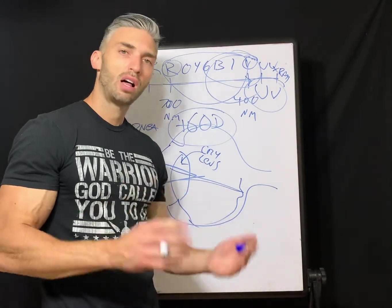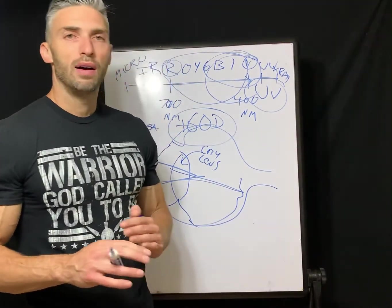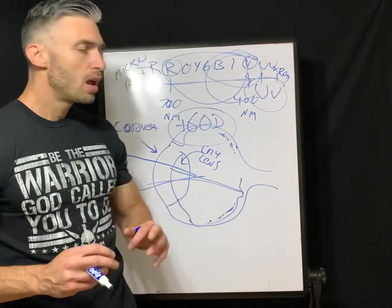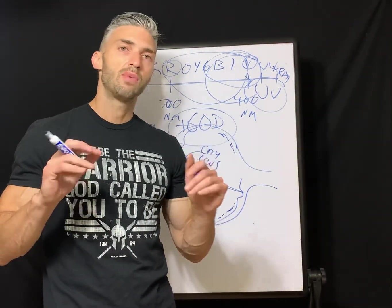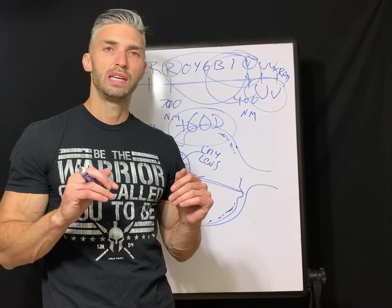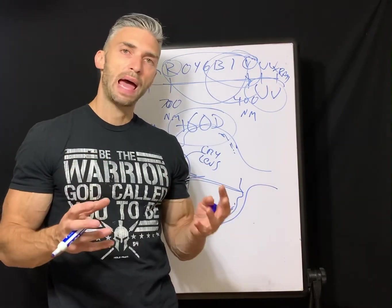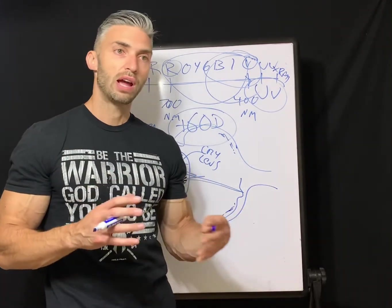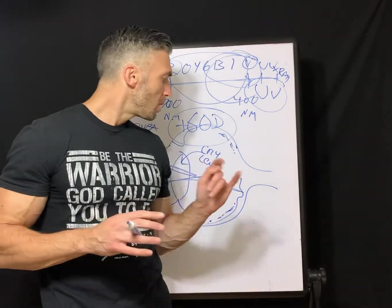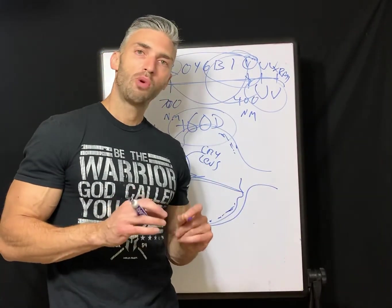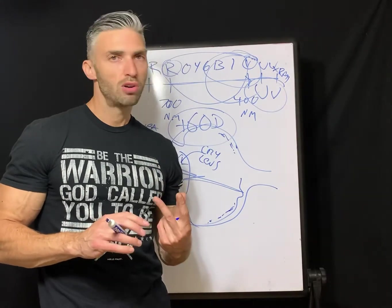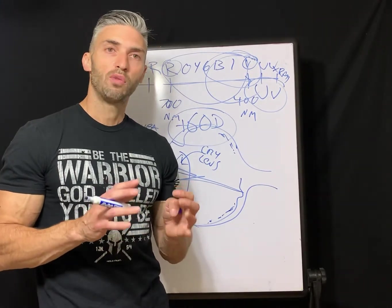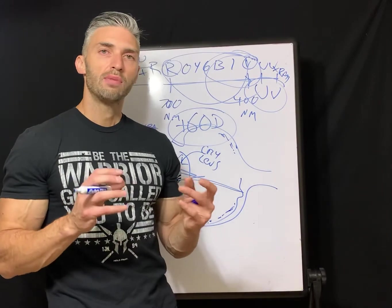Rod photoreceptor cells, located more in the periphery of the retina, react very easily when stimulated by visible light — they flicker and send patterns to the brain, which interprets them as shades of gray or night vision. Cone photoreceptor cells are much more discerning; there are three basic types and they respond differently to different wavelengths of light.